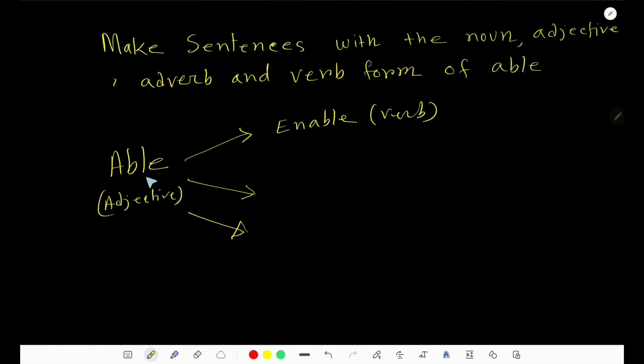What is the noun form of able? That is, ability. A-B-I-L-I-T-Y. The noun form of able is ability. This is noun.